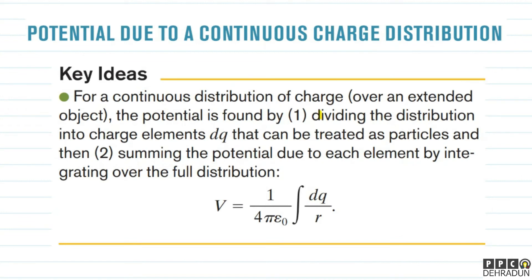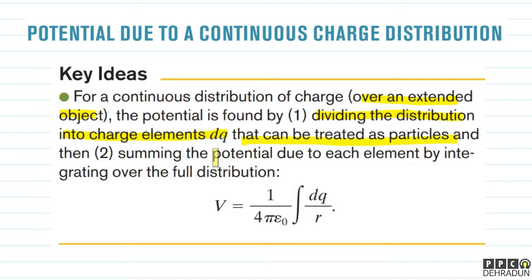Now we will find the potential due to continuous distribution of charge over an extended object. To do this, first we divide the distribution into charge elements dq that can be treated as particles. Then we write the potential as kdq/r, and sum the potential due to each element by integrating over the full distribution.